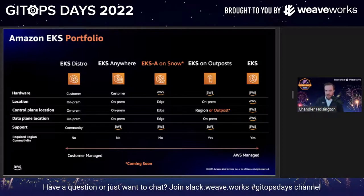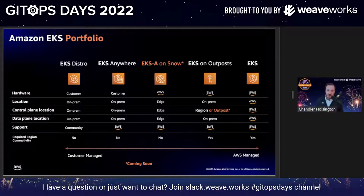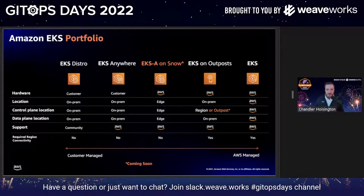If Outpost isn't for you and you need to run Kubernetes on a smaller, more durable device, we're also launching EKS Anywhere on our Snow devices later this year. And lastly, if you have your own hardware — you're locked into some leases or have specialty hardware you want to run in your data center — that's where EKS Anywhere comes into play. That's what Joey will be doing the demo on today. It's really the most flexible way to run Kubernetes outside of Amazon because it can run on pretty much any infrastructure.